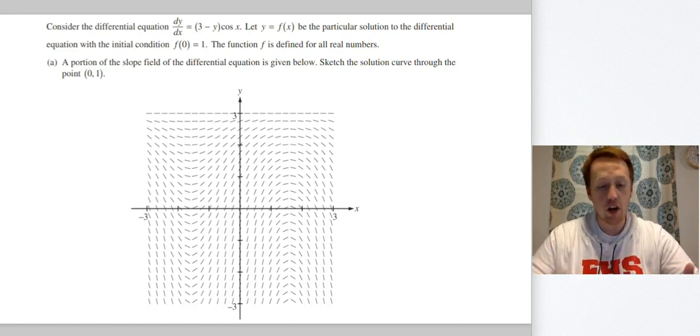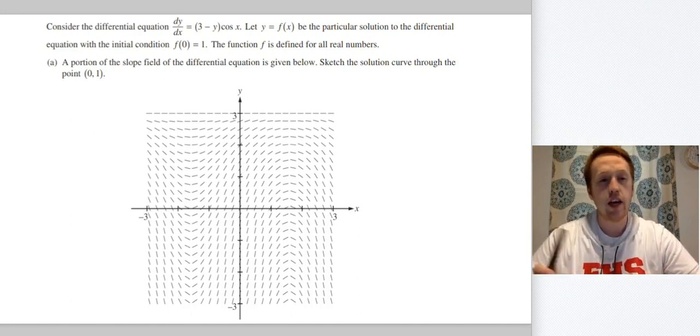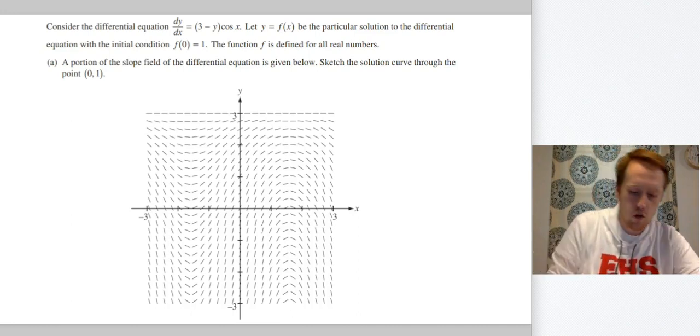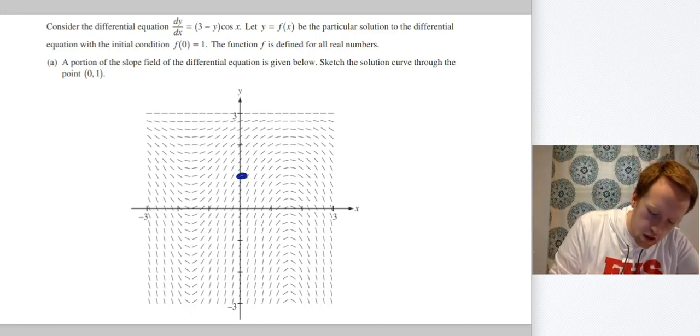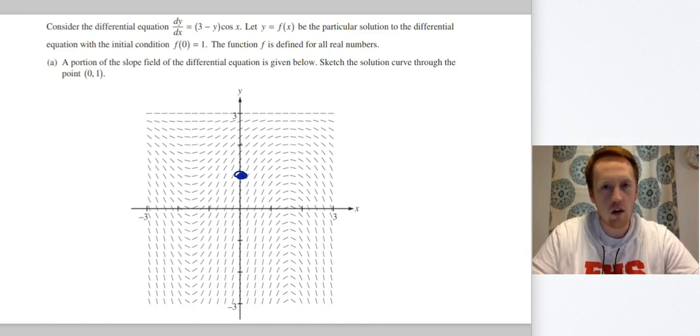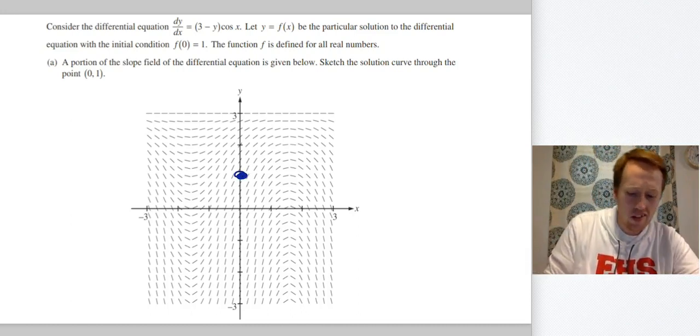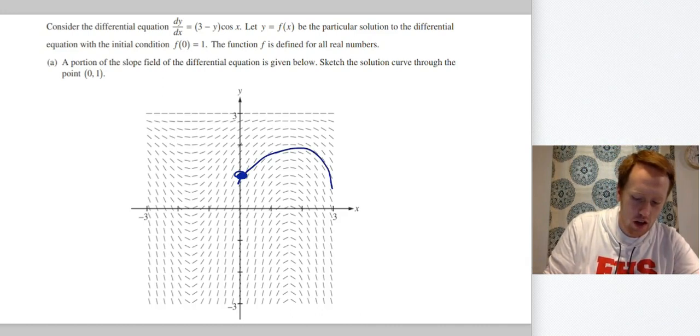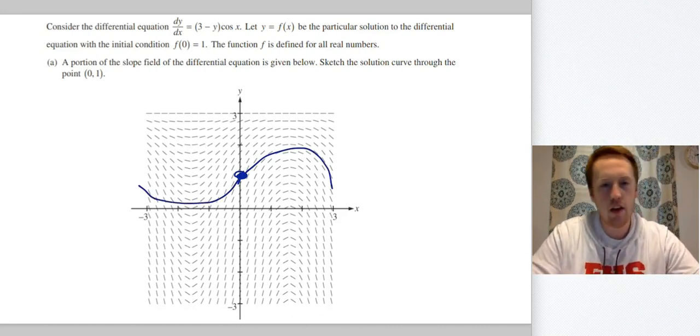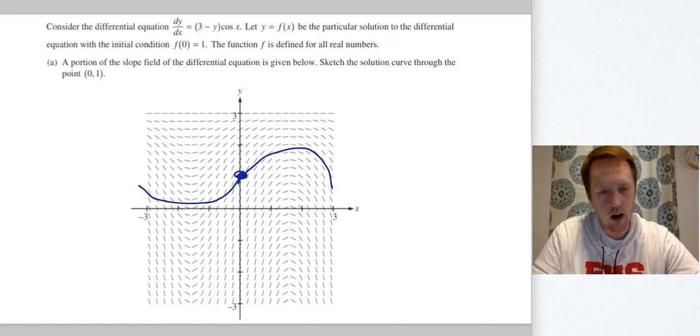So remember when you're given a slope field, what you do is you go to the point that they tell you to. So that's right here. If you don't put that point, you're automatically wrong. It has to go through that. Other than that, you just follow the train tracks. So it looks something like that. I mean, I drew it horribly and it's still pretty much right. As long as you roughly follow what the slope field is telling you to do.